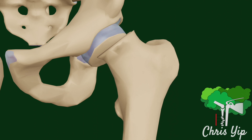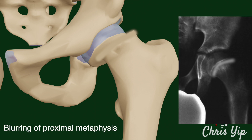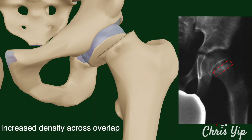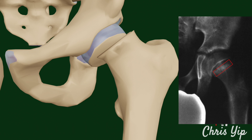The displacement will lead to the blurring of the proximal metaphysis, and it will also lead to an increase in the density of the proximal metaphysis due to the overlapping of the bones. Osteopenia within the femoral metaphysis may also be seen.